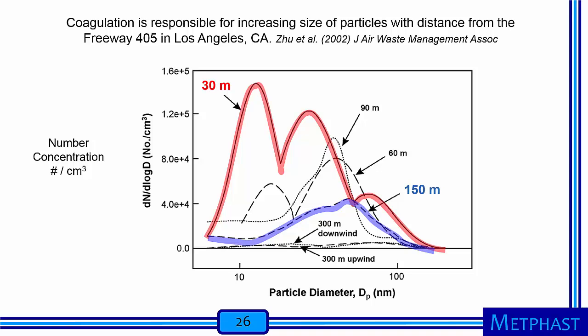Coagulation can also be seen in these important measurements made near a freeway in Los Angeles. Near the freeway, 30 meters away as highlighted in red, there were many very small particles freshly generated by vehicle combustion. These particles occurred at such high concentrations that they hit each other, stuck, and formed larger particles as they moved away from the source, as shown in blue, 150 meters away from the freeway. Based on these measurements, legislation was enacted to prevent schools from being built near freeways in an effort to reduce ultrafine exposures among children.